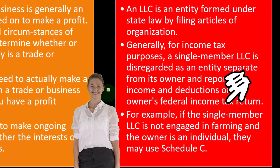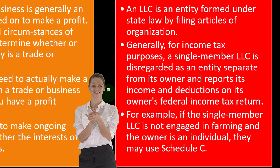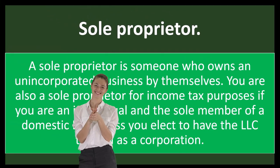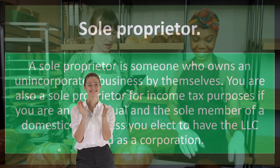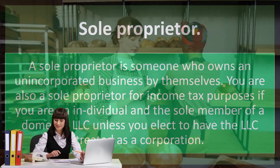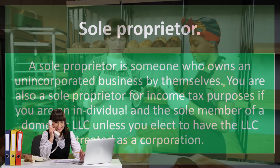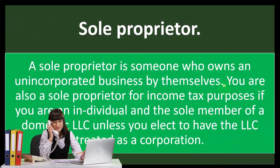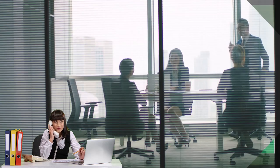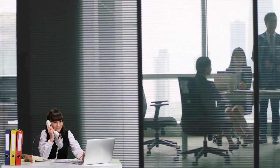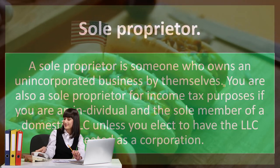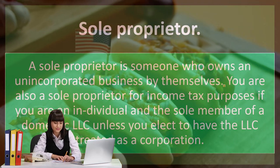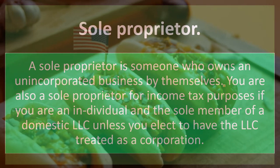For example, if a single-member LLC is not engaged in farming, the owner may use Schedule C. A sole proprietor is someone who owns an unincorporated business by themselves — if it were incorporated, it would be a corporation and a separate legal entity. There are different kinds of corporations such as a C corporation versus an S corporation. If one person just started doing business — started a hot dog stand, for example — obviously they didn't incorporate it or do the paperwork to make it a separate legal entity, but they started making money and the IRS wants a piece.